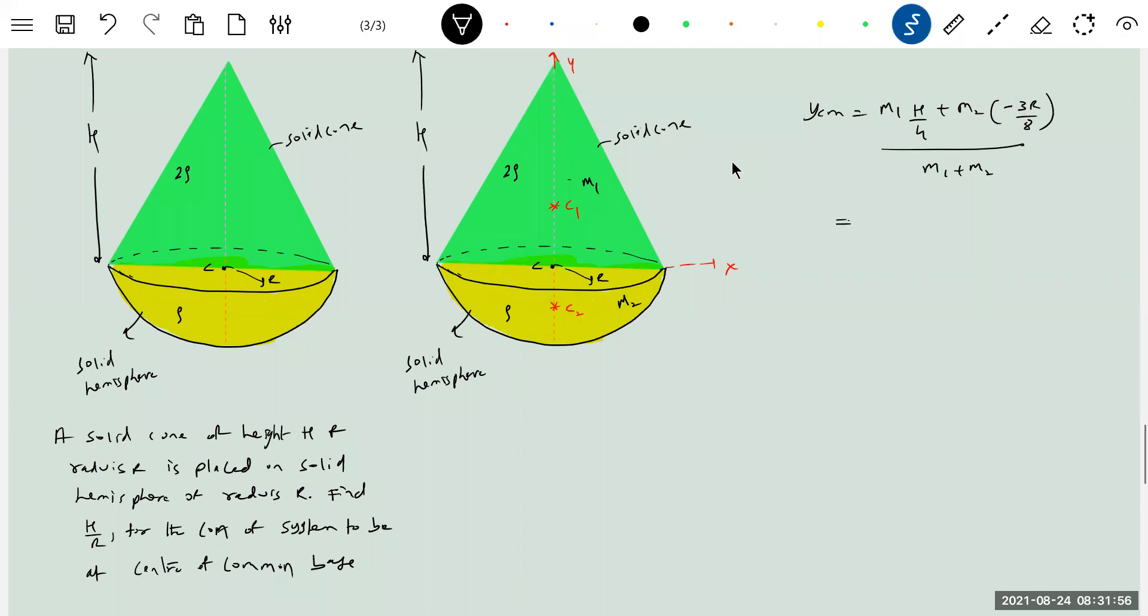What is M1? Density ρ, volume of cone π R² H by 3, into H by 4. What is M2? Solid hemisphere, density is ρ, 2 by 3 π R³, this negative sign, let me write it here, so 3R by 8.